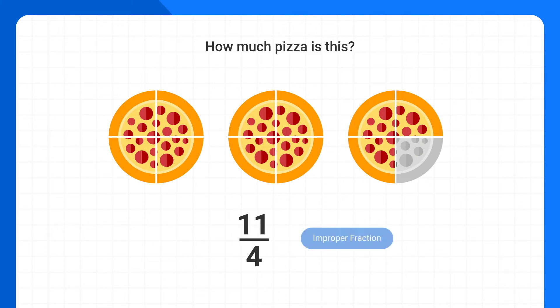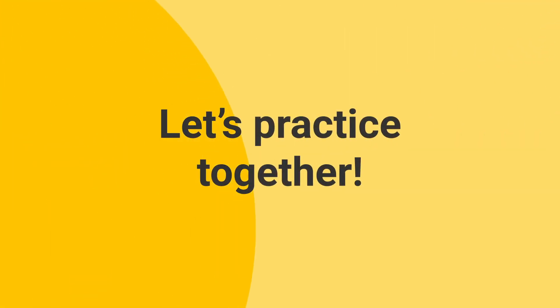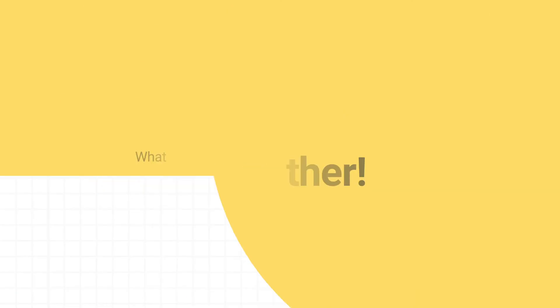The fraction 11 fourths is one way to describe this amount of pizza, and it's called an improper fraction, because the numerator of 11 is larger than the denominator of 4. This means our fraction is larger than one whole. Now let's practice identifying an improper fraction together.